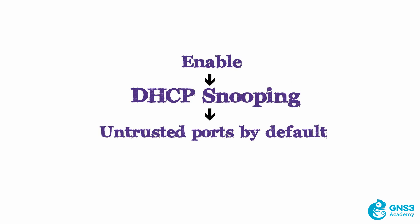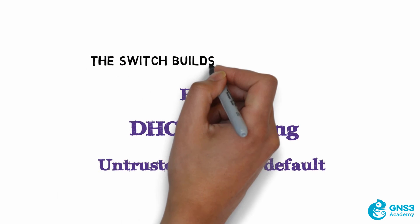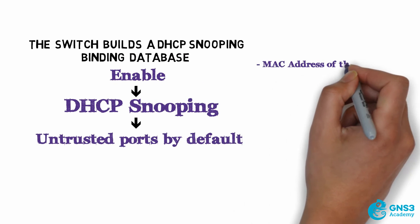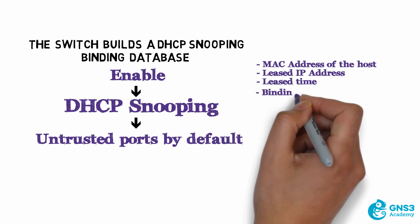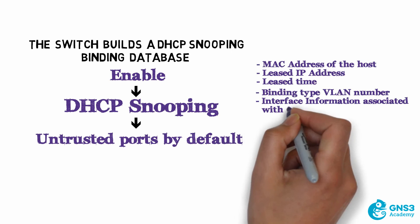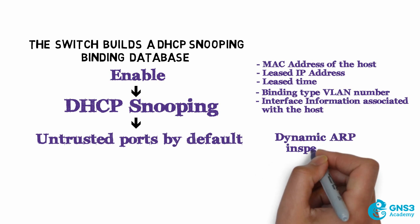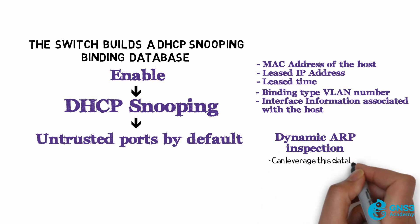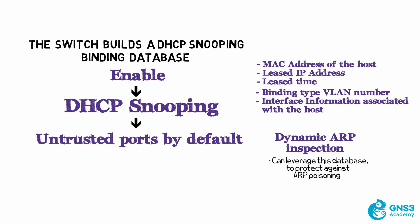When you enable DHCP snooping, the switch builds a DHCP snooping bindings database, which includes the MAC address of the host, the leased IP address, the lease time, binding type, VLAN number, and interface information associated with the host. Other security features such as Dynamic ARP Inspection can leverage this database to protect against ARP poisoning in an Ethernet environment.